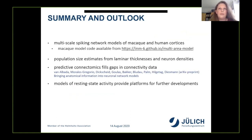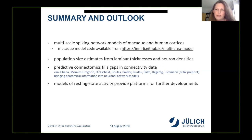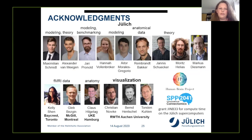To summarize, we have developed multiscale spiking network models of macaque and human cortices. The macaque model code is freely available on GitHub. We derived population sizes and connectivity based on extensive experimental data, complemented with predictive connectomics — statistical estimates based on known quantities. We recently wrote an extensive introductory chapter on bringing anatomical information into neuronal network models. These models are meant as platforms for further developments and, hopefully, for a better understanding of cortical function in the future.